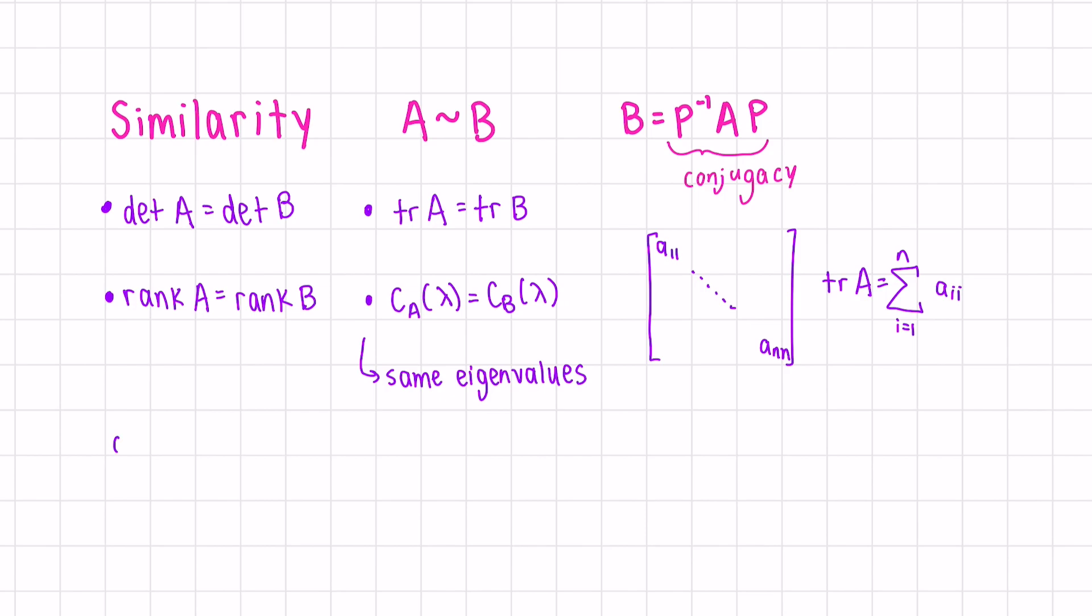Just a reminder that the characteristic polynomial is the determinant of lambda times the identity matrix minus the matrix A. But the opposite is not true. Sharing all these properties doesn't imply similarity. To prove similarity, you have to actually find this invertible P.